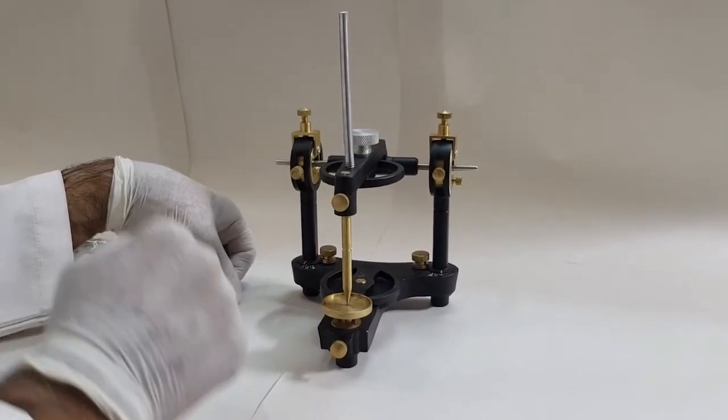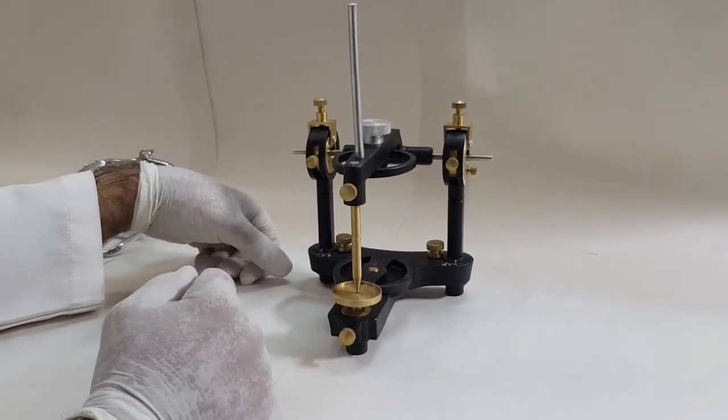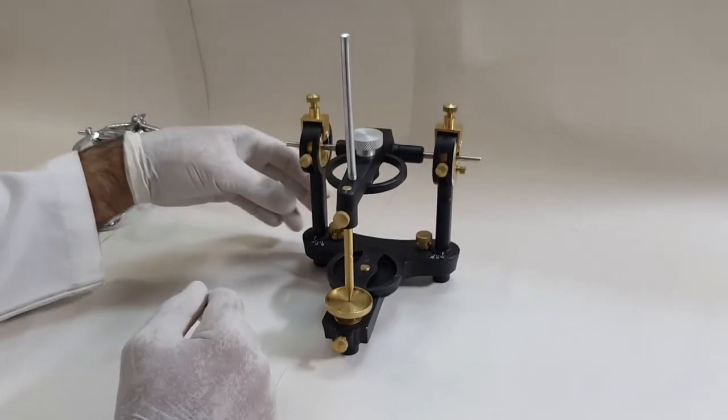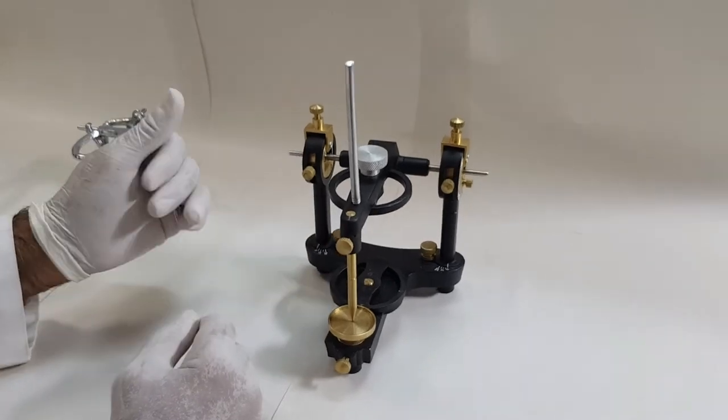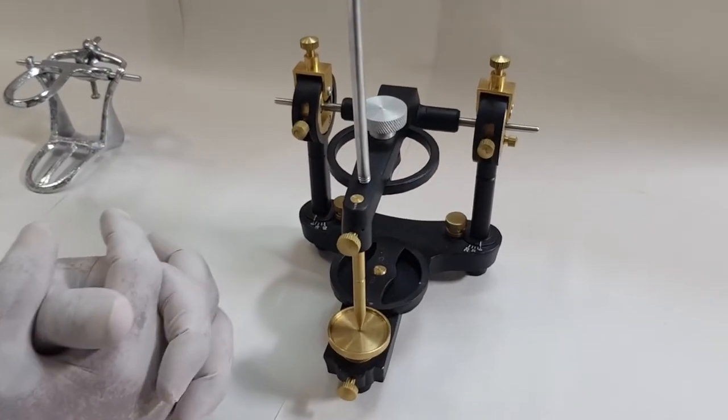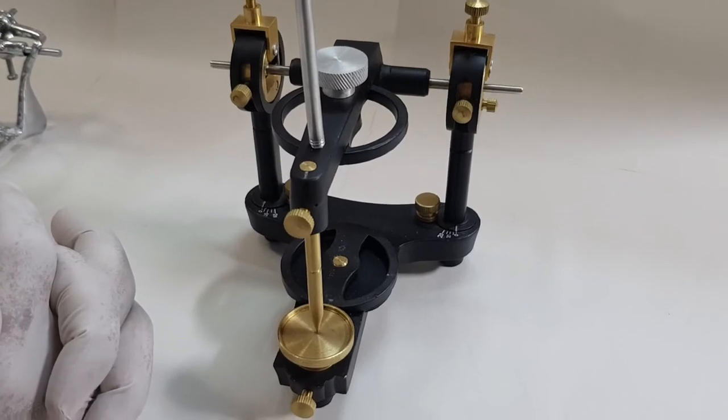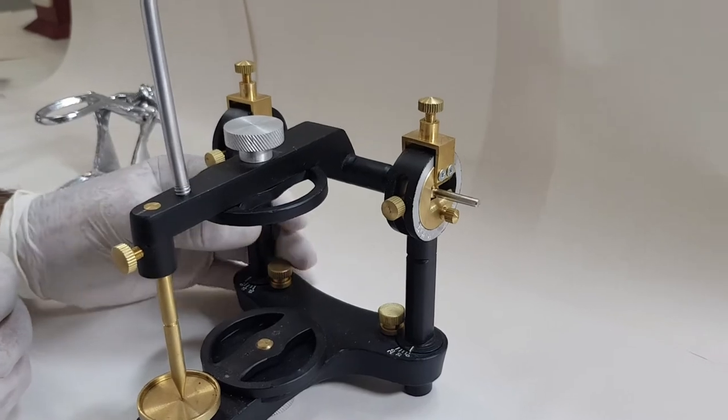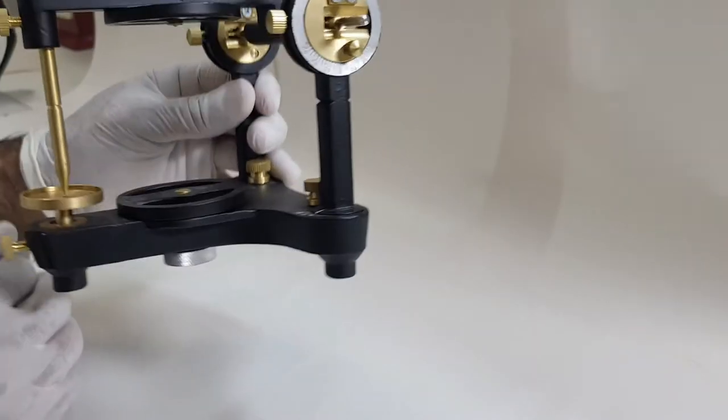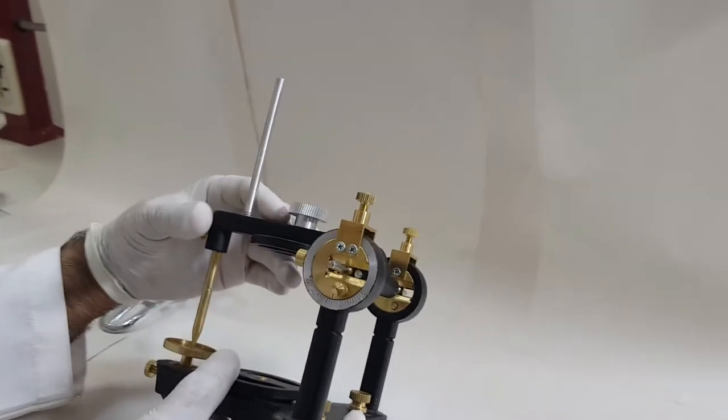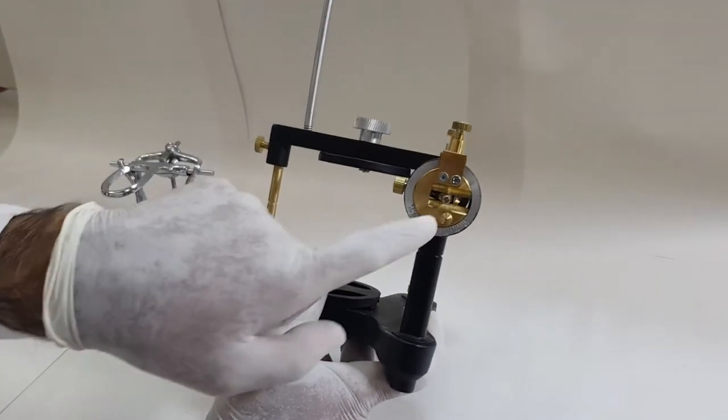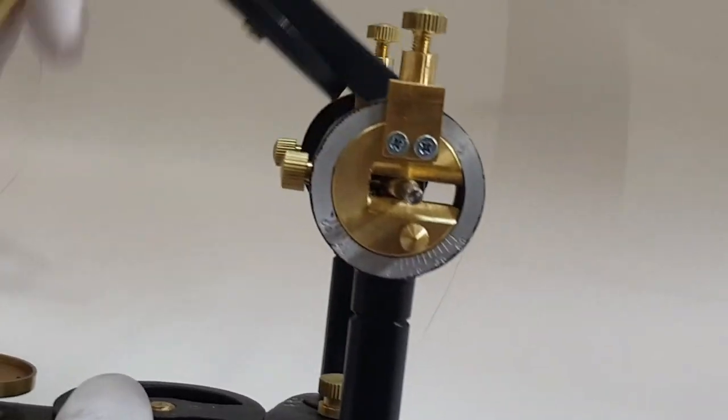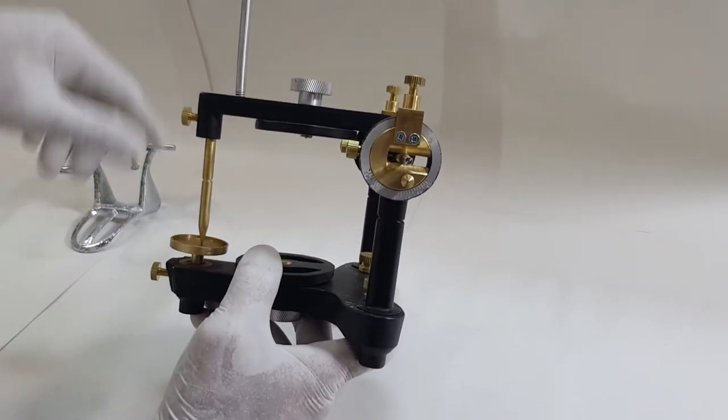The other category of this articulator is that this is a non-archon articulator. Why do I say that it's a non-archon articulator? The reason is that if you recall the anatomy of the temporomandibular joint, the condyle is on the mandible and the glenoid fossa is with the temporal bone. Now, in this case, in a non-archon articulator, the condyle over here, if you can see inside, this is the condyle. It is attached with the upper member and the lower member does not have the condyle.